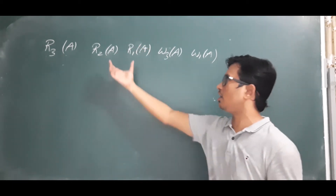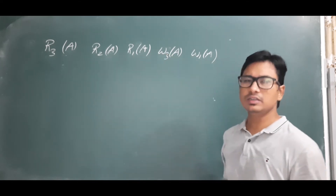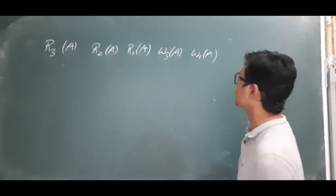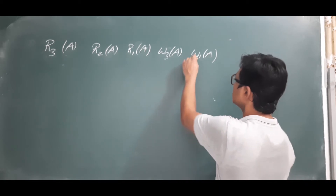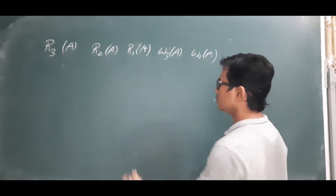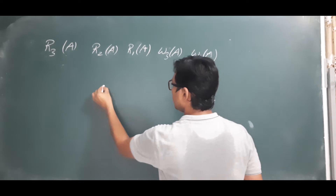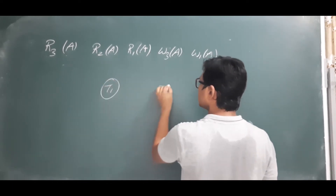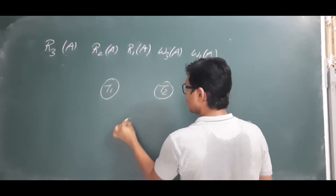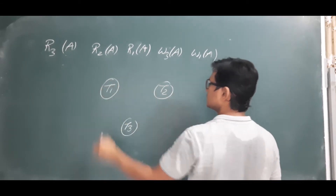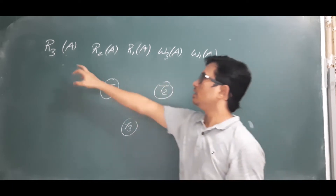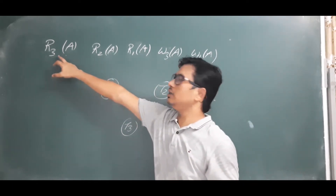First you need to find how many transactions there are. There is transaction one, transaction two, and transaction three, so there will be three nodes in the precedence graph: T1, T2, and T3. Now you see there is a R3(a) in the schedule.